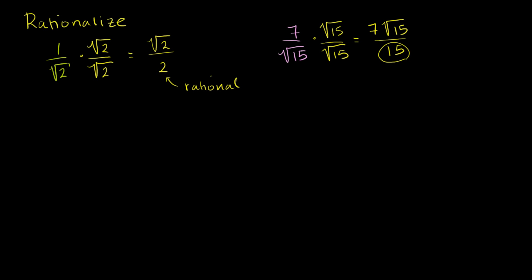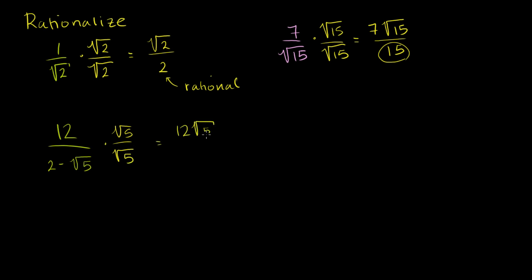We haven't changed the number, we just changed how we represent it. Now let's take it up one more level. What happens if we have something like 12 over 2 minus the square root of 5? In this situation, where I have a binomial in the denominator that contains an irrational number, I can't do the same trick. If I multiply by the square root of 5 over the square root of 5, I'm still going to have an irrational denominator. Just to show you it won't work: the numerator would be 12 times the square root of 5, but the denominator — distributing — gives 2 times the square root of 5 minus the square root of 5 squared, which is 5. So although this part became rational, this part, 2 times the square root of 5, became irrational. This is not what you want when you have a binomial with an irrational number in the denominator.